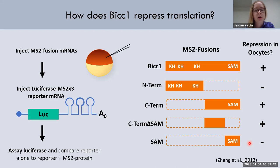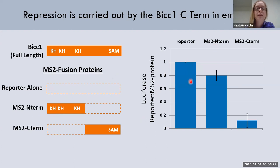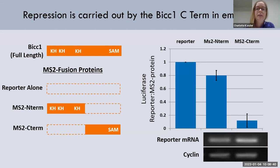Seeing as cell fate decisions are an embryonic event, we wanted to adapt the tethered function assay to embryos and test portions of Bicoid-C there. When we micro-inject into embryos, the reporter mRNA alone is translated effectively and expresses luciferase. When the N-terminal half of Bicoid-C is tethered to the reporter, it is ineffective at repressing translation. However, when the C-terminal half is tethered, we see a loss of nanoluciferase expression, indicating that this half of the protein has repressed the reporter mRNA in embryos. Importantly, analysis of reporter mRNA expression levels showed the mRNA is still present in these samples, indicating it has been translationally repressed but not decayed.